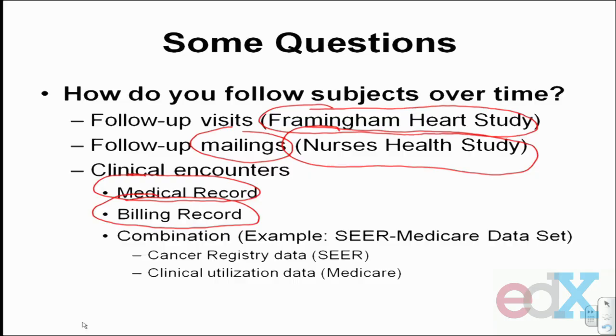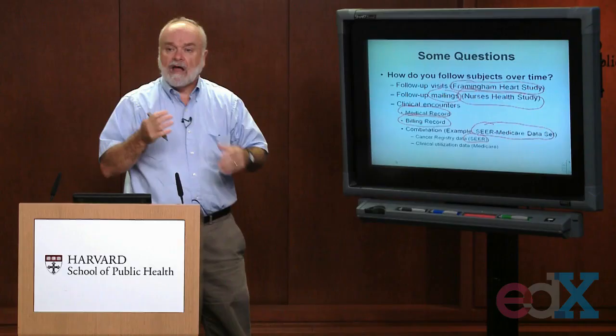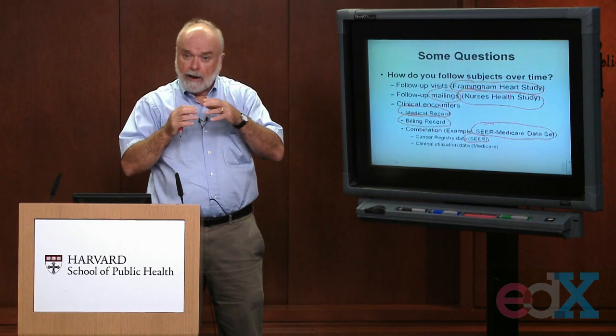A nice example of a data set combining both clinical and billing information is the SEER-Medicare data set. The SEER part comes from cancer registries around the country — if you develop cancer in one of these locations, your clinical information is automatically uploaded to a central cancer registry, capturing the diagnosis, the stage, when it was diagnosed, and how serious it was. Additionally, if you're above age 65, you're enrolled in Medicare, which collects billing information for every encounter funded under that insurance plan — how many times you saw your doctor, were admitted to hospital, and what procedures and diagnoses were made.